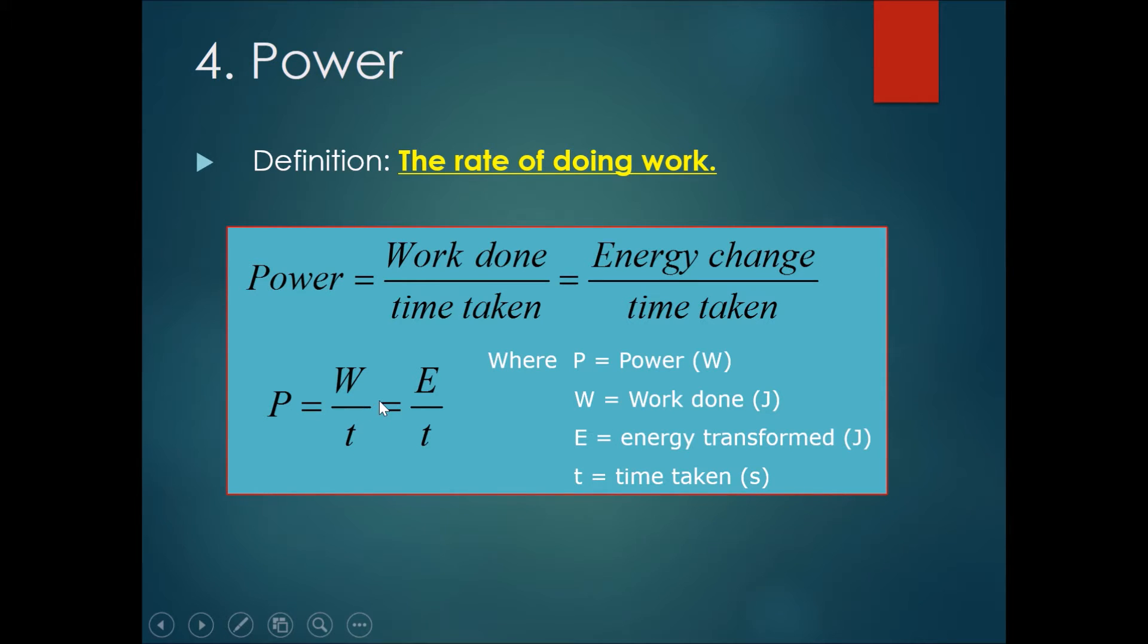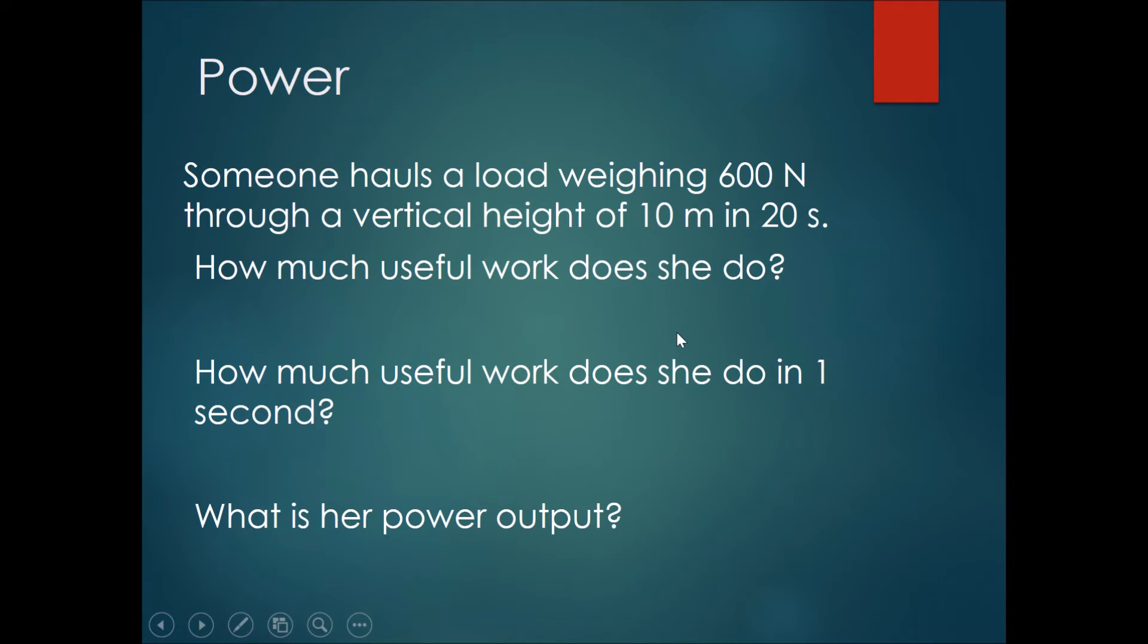Work done over time taken, or also equals E over t, energy over time. Myself, I prefer power equals energy over time—that makes it easier. W represents work done, which is in joules. E represents energy transformed, which is also in joules. And t represents the time taken in seconds. The SI unit of power is the watt. The symbol for its SI unit is W. Power is a scalar quantity.